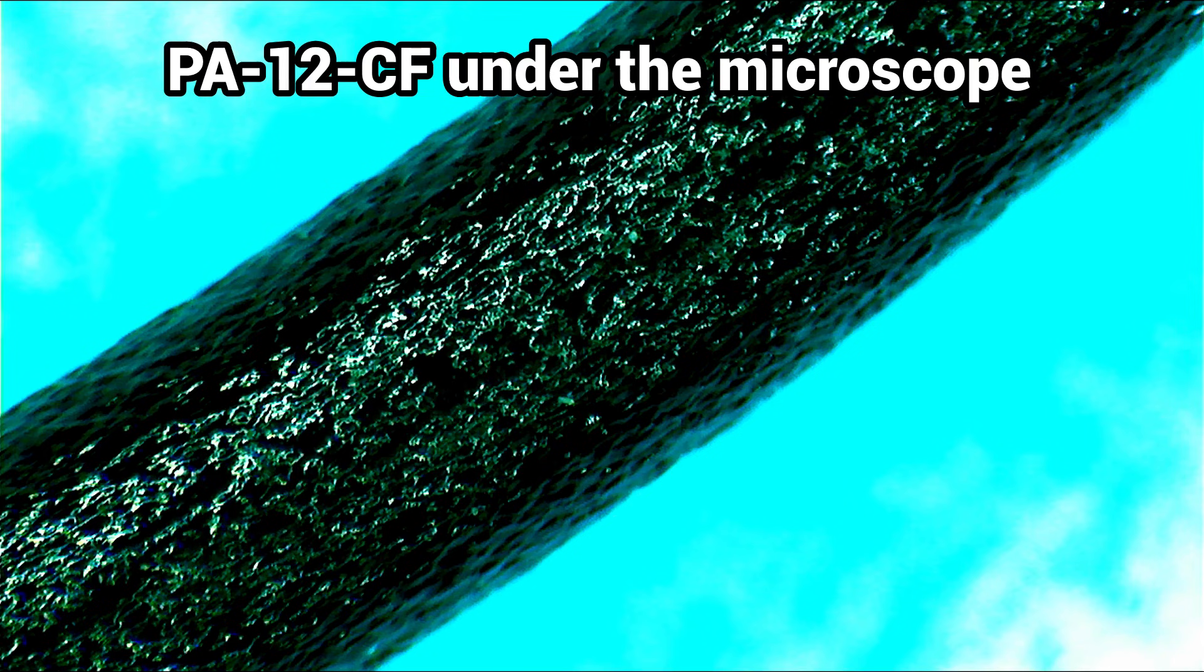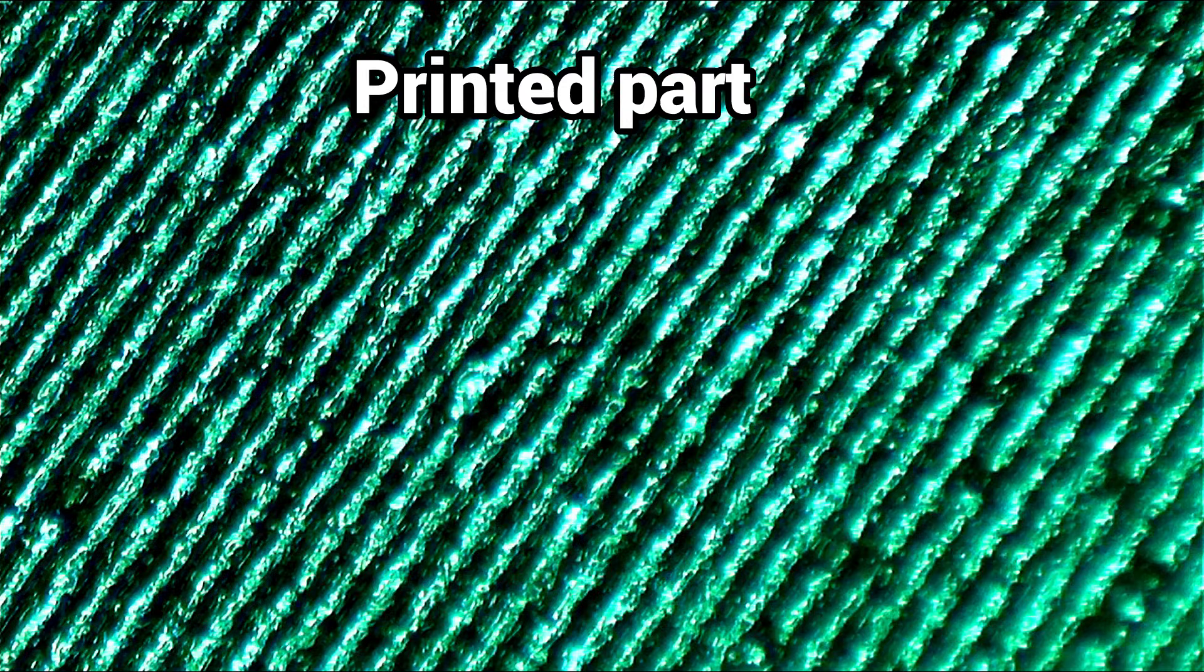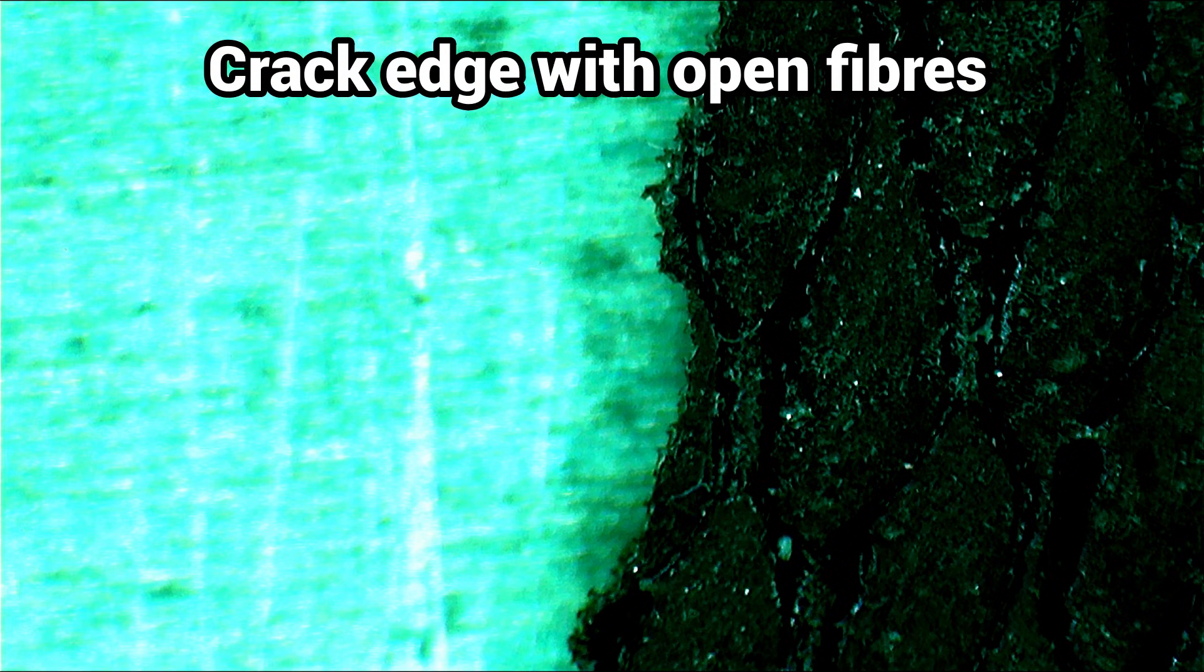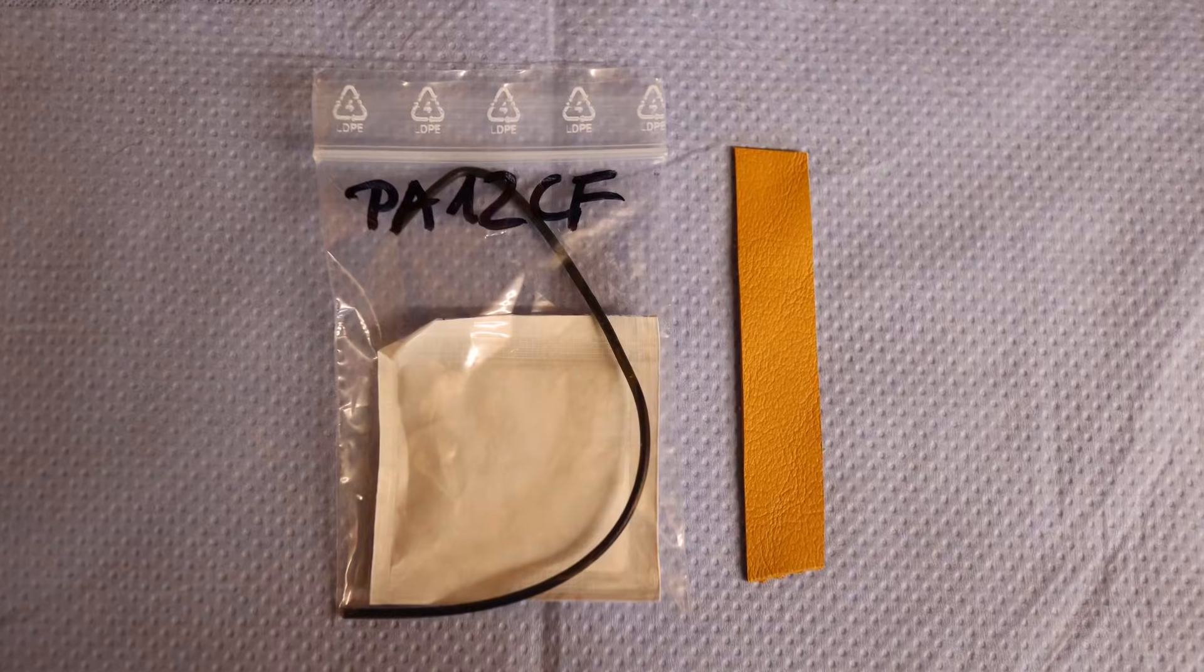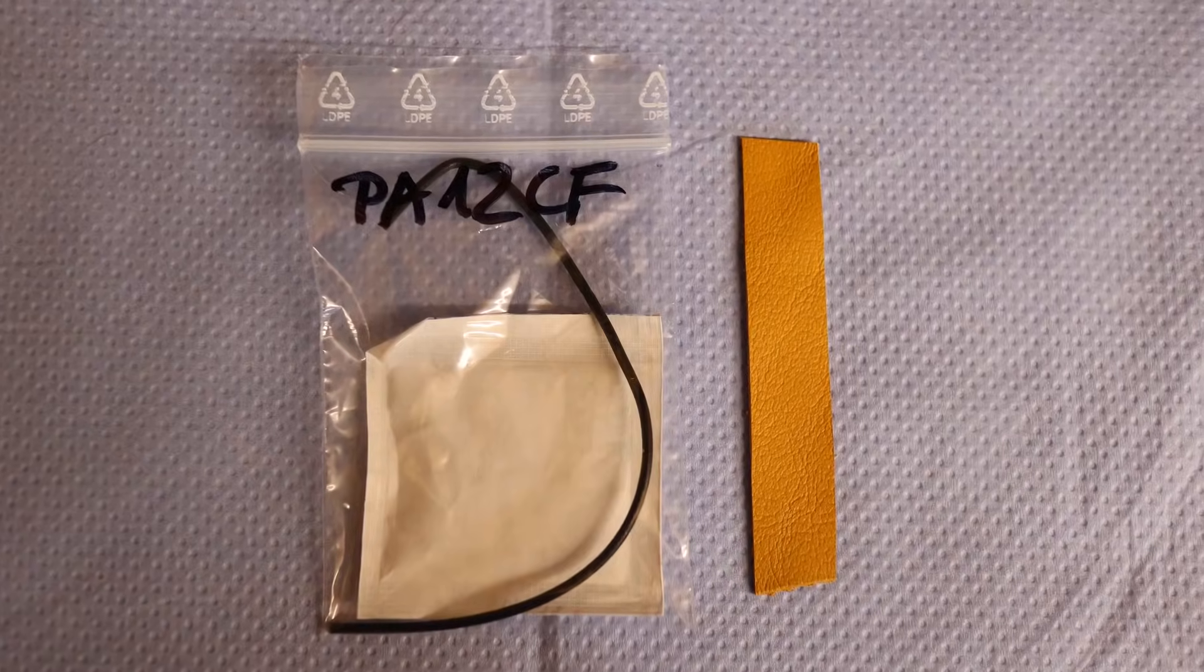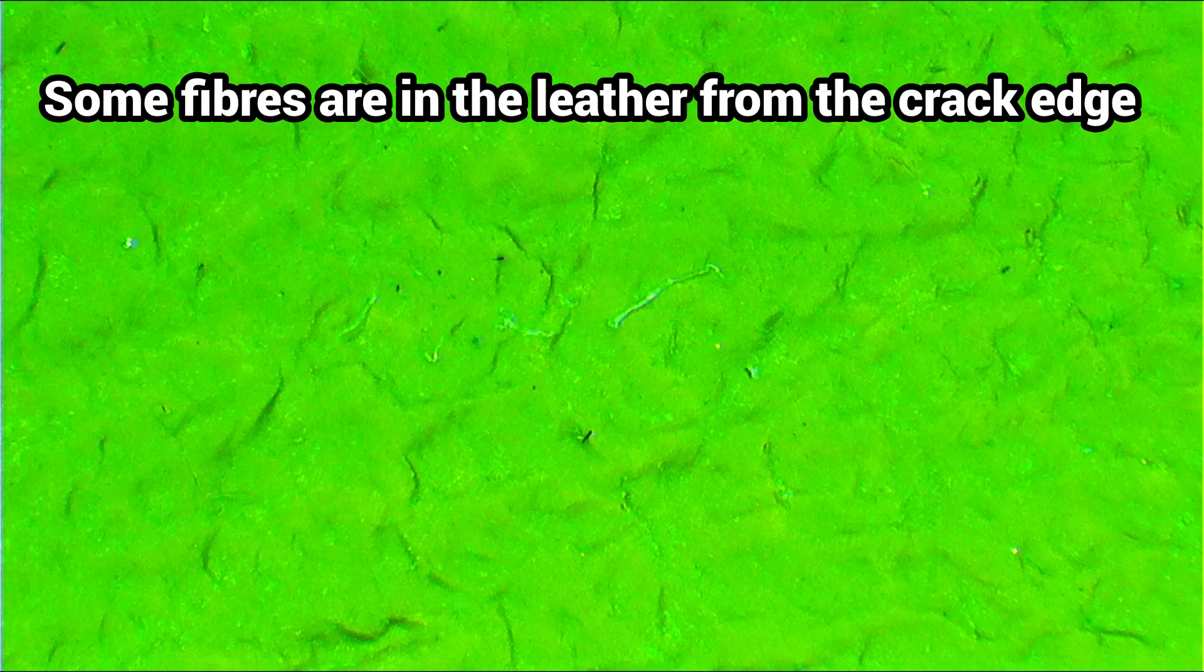I took a close look at the filament, the printed parts and crack edges under the microscope. No exposed fibers can be seen on the filament and parts. Fibers only protrude at the crack edges. When a leather strip is rubbed intensively over the filament and printed part, no fibers get stuck to it. But carbon fibers stick into the leather from the tear edge.